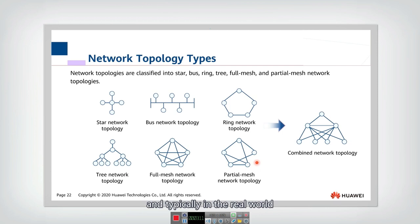And typically in the real world some network is composed of the combined network topology. So for example here it looks like some tree topology but actually they also have some mesh links between nodes.